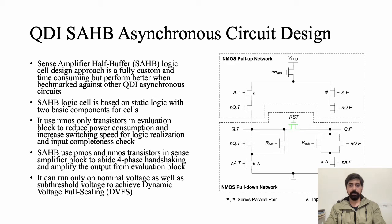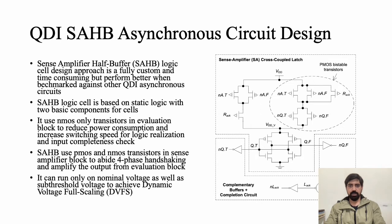The SAHB cell uses NMOS-only transistors in the evaluation block to reduce power consumption and increase switching speed for logic realization and input completeness check. It also uses PMOS and NMOS transistors in the sense amplifier block to abide by the four-phase handshaking protocol and amplify outputs from the evaluation block. This design takes advantage of dynamic voltage full scaling (DVFS) to work on nominal voltage as well as sub-threshold voltage, making it faster and consuming less power.